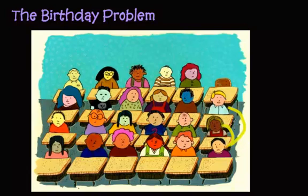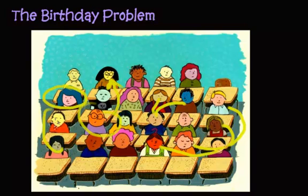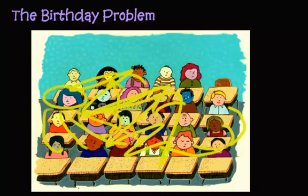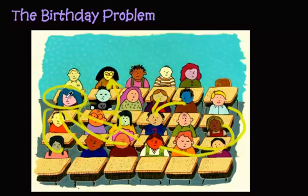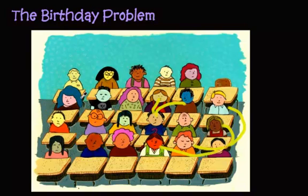There are a lot of different possibilities — he could share with this girl back here, she can share with everybody in the front row. That is a very bad way of trying to approach this problem. A better way would be to look at this problem and look at its complement.